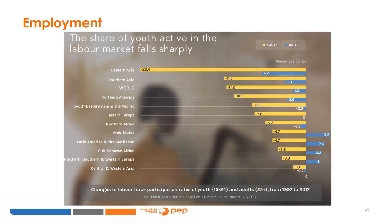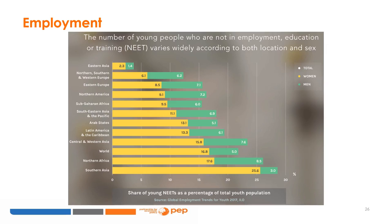In the past 20 years, labour force participation rates of young people have fallen, explained by increases in exclusive enrollment in higher education. Eastern Asia witnessed the greatest decline of 23%, followed by South Asia and North America with declines of 11.5 and 10%, respectively. Regarding NEETs, in East Asia less than 5% of people aged 15 to 24 are NEET, while in North Africa and South Asia more than 25% are out of employment, education, or training. In almost all world regions, with the exception of Europe, a higher share of women than men are NEET, most likely because they are dedicated to household activities including caring for others.